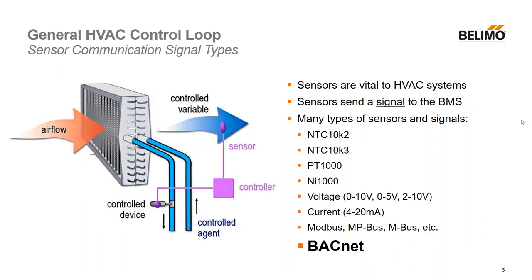The first topic is a generic slide on HVAC control loops. This image is meant to be a very generic control loop, really consisting of air flowing through some sort of coil or heat exchanger, a variable being measured — let's assume in this scenario it's temperature — the sensor performing the measurement, a controller, and of course a control device, most likely an actuator, that will modulate a valve based on the sensor's reading. For the purpose of this presentation, let's focus on the sensor side of things.